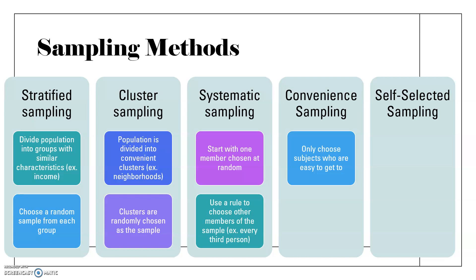Convenience sampling means you only choose subjects who are easy to reach or get a hold of, and it has a high risk of bias for that reason. In the 2020 election, polls didn't seem very accurate. Part of the problem was convenience — Trump voters were particularly unwilling to answer poll questions, so they were underrepresented in polls.